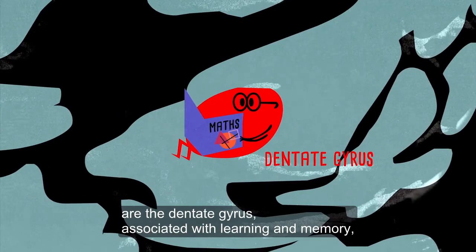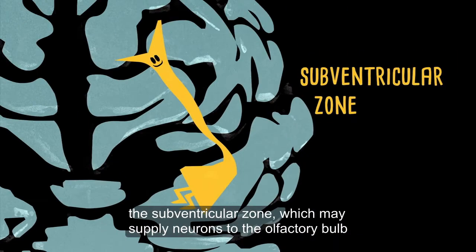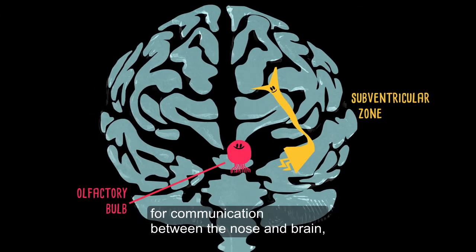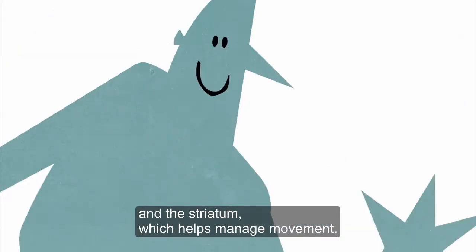The three regions where neurogenesis has been discovered are the dentate gyrus, associated with learning and memory, the subventricular zone, which may supply neurons to the olfactory bulb for communication between the nose and brain, and the striatum, which helps manage movement.